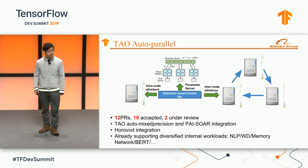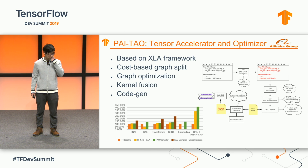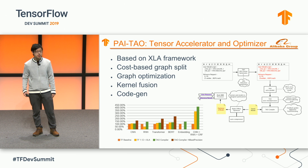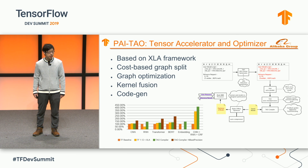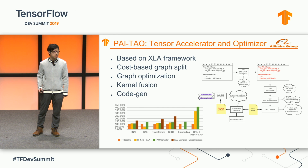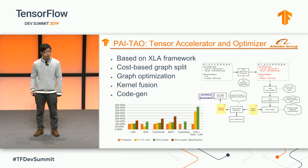For easy programming, we worked with the community to improve auto-parallelism. We also introduced TAO, which is based on the XLA framework and includes a lot of optimizations, including cost-based optimization, graph speed, graph optimization, kernel fusion, and a full-stage code generation engine.